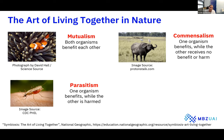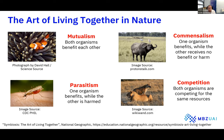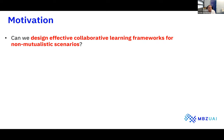Finally, you have competition, where both organisms compete for the same resources — like a lion and a hyena competing for the same prey. In nature there are all these different types of relationships, whereas in collaborative learning most work focuses on mutualistic behavior. The motivation for my work is: can we design effective collaborative learning frameworks for non-mutualistic scenarios like commensalism, parasitism, and competition?